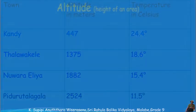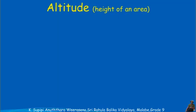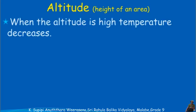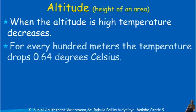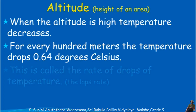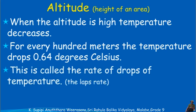Pidurutalagala demonstrates the altitude effect clearly. When the altitude is high, the temperature decreases. For every 100 meters, the temperature drops 0.64 degrees Celsius. This is called the rate of temperature decrease.